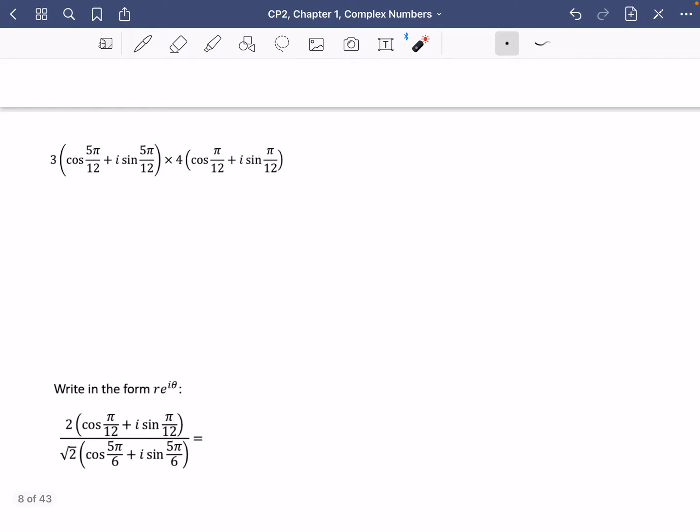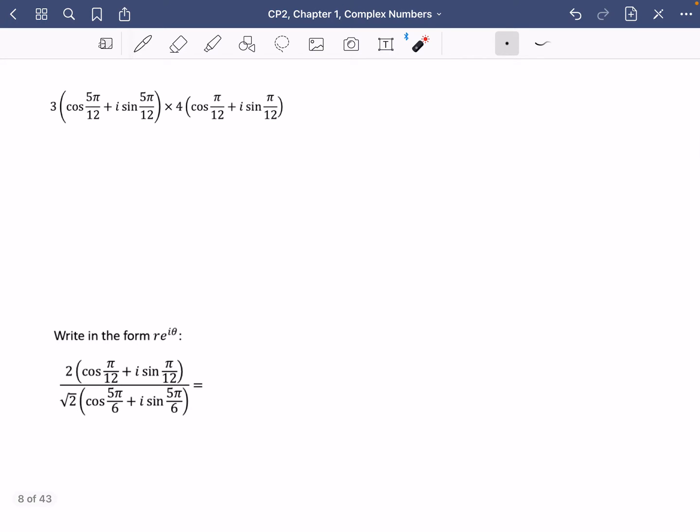So we're going to try and work out what this first one here is. Things that we want to identify: we know the value of R in both of them. So I know that they are just going to multiply the modulus. And I've also got the arguments. I've got 5 pi over 12 and pi over 12. So I'm just going to actually add together those arguments.